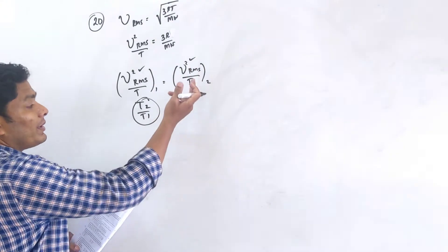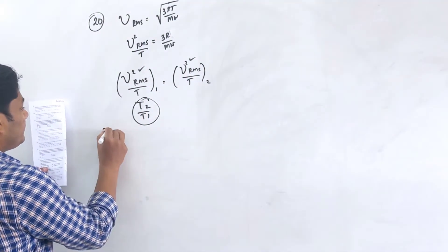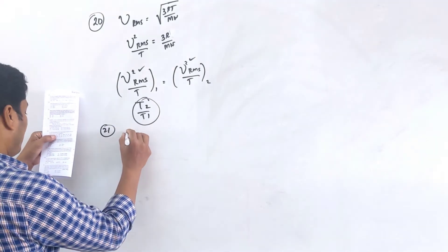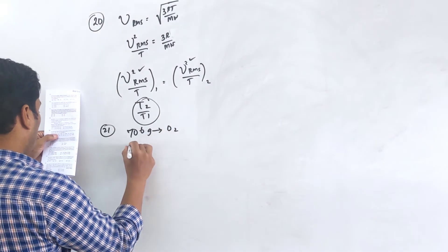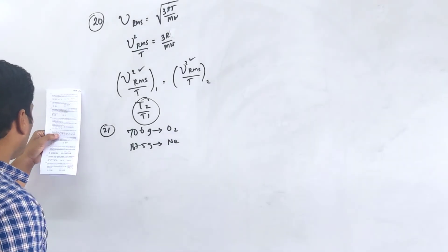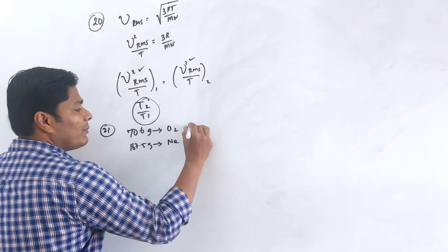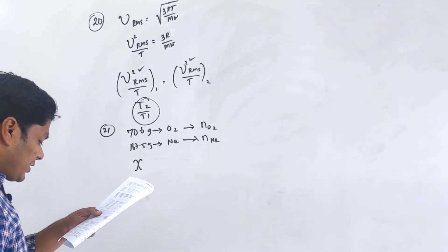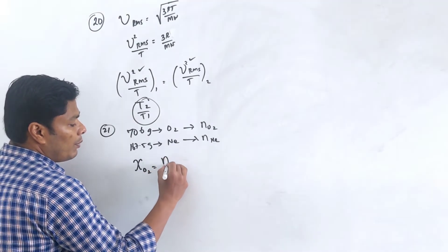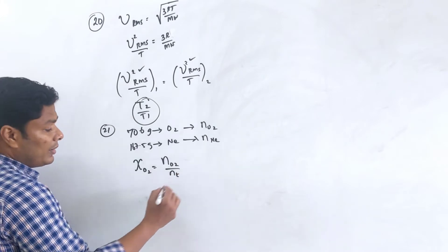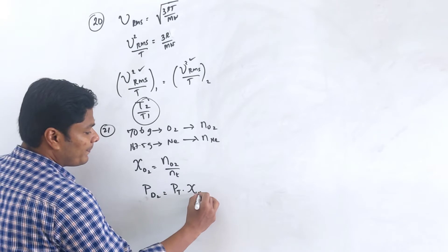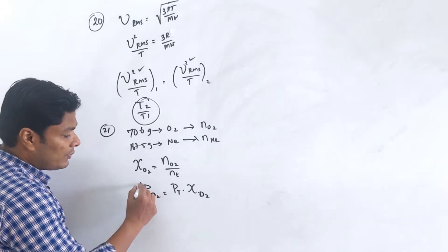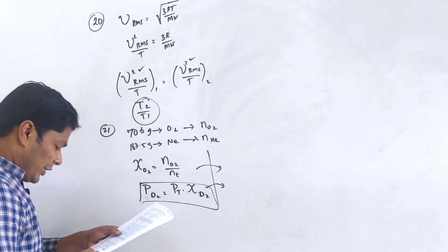Question 21: Neon-oxygen mixture with 70.6 g O2 and 167.5 g neon; total pressure 25 bar. Calculate moles of O2 and neon, then mole fractions. Partial pressure of each gas equals total pressure times mole fraction. Option D.